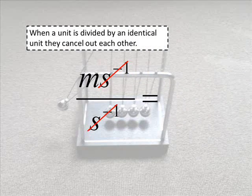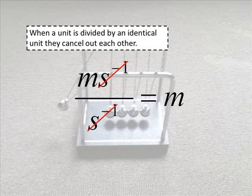In this case here, we've got two identical units, s to the negative 1 on the top, s to the negative 1 on the bottom. They cancel out, and we're left with just n.